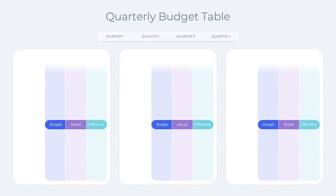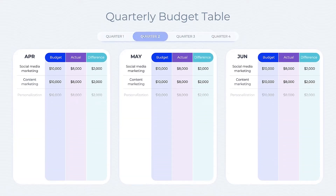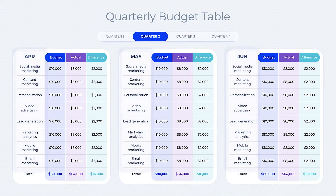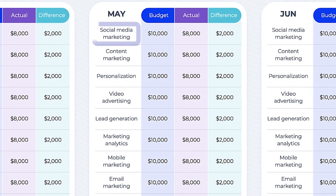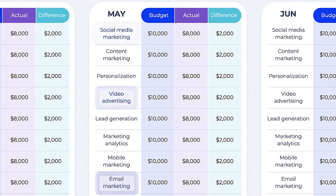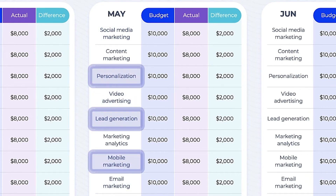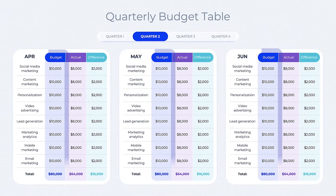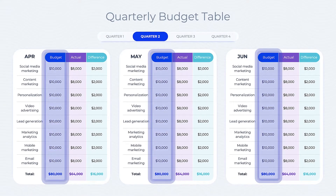First, identify various expenses and list them out by category, such as social media, video advertising, or email marketing. Then, add any new marketing strategies to the list that you want to implement during the period. Assign a budget amount to all of these categories.